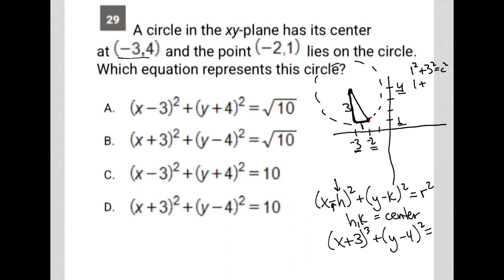So I have 1 + 9 = c², so 10 = c², and therefore c = √10. Therefore my radius is √10.